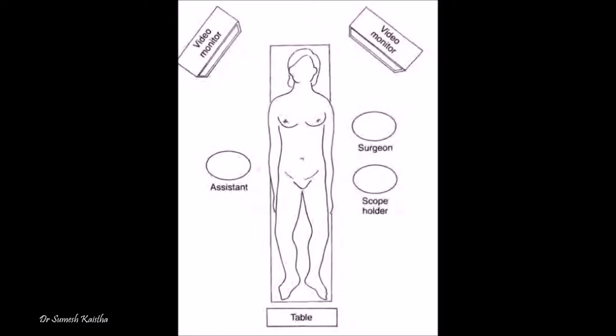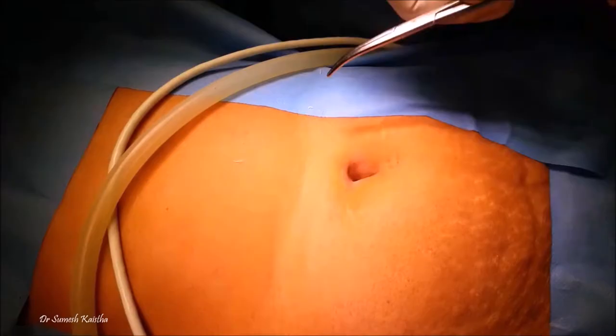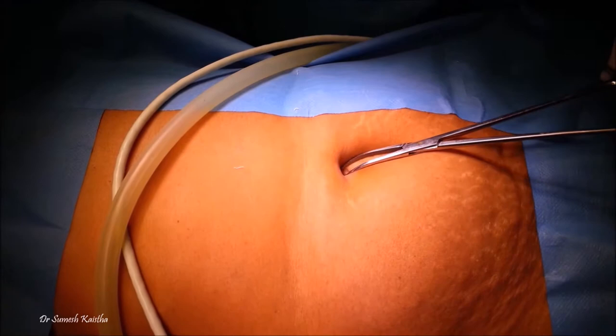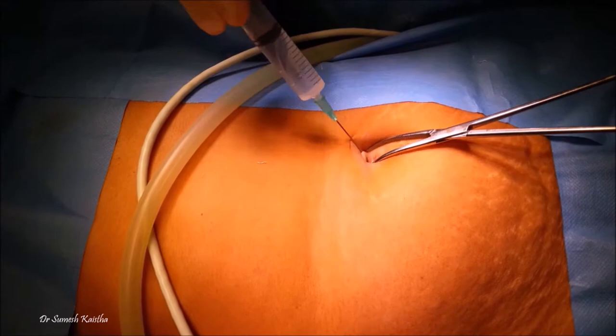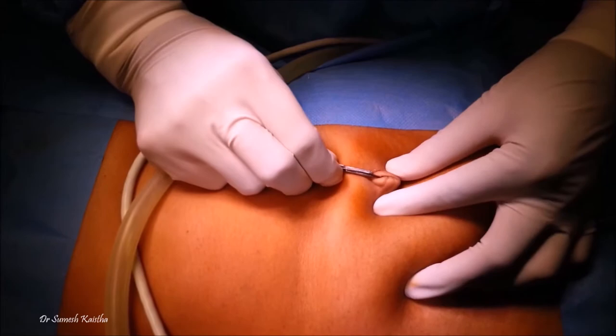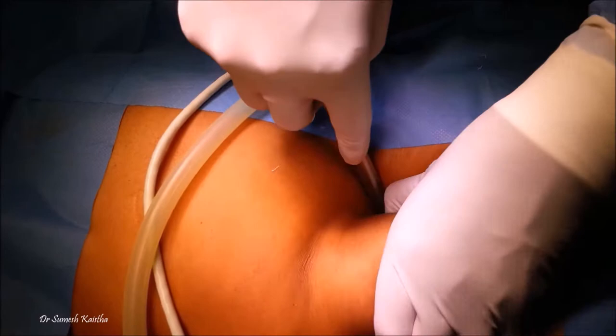Patient is placed in supine position under general anesthesia and this is the team setup. A 10 millimeter port is inserted through the umbilicus using direct trocar insertion. Many surgeons use open technique or various needle or optical port depending on individual choice.